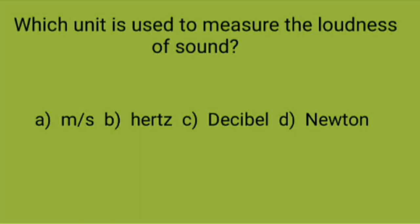Which unit is used to measure the loudness of sound? A: Meter per second, B: Hertz, C: Decibel, D: Newton. Correct option is C, decibel.